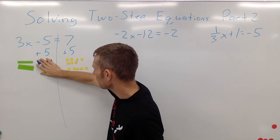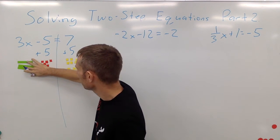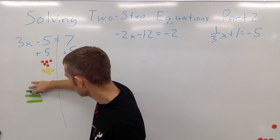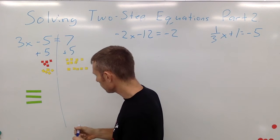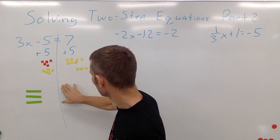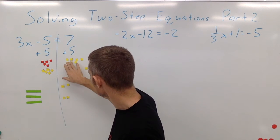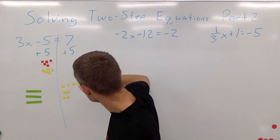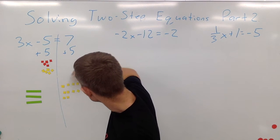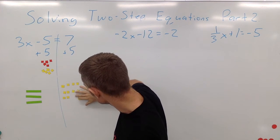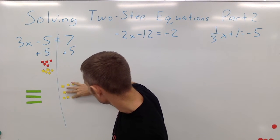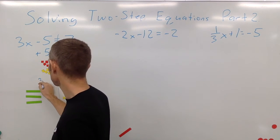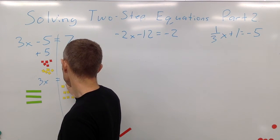We can see that the minus 5 and plus 5 cancel, and we're still left with 3x on the left side. On the right side, 7 plus 5 gives us a total of 12, so now we have 3x equals 12.